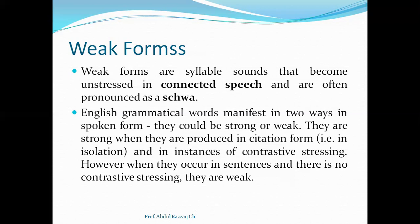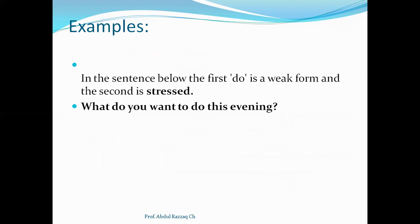However, when words occur in sentences — when they are not in citation form, not in isolation, and there is no contrastive stressing — then they are weak forms. For example, in the sentence 'What do you want to do this evening?', the first 'do' is a weak form and the second is stressed. The first 'do' is grammatical, used in question formation in present indefinite tense, while the second 'do' is a content word.